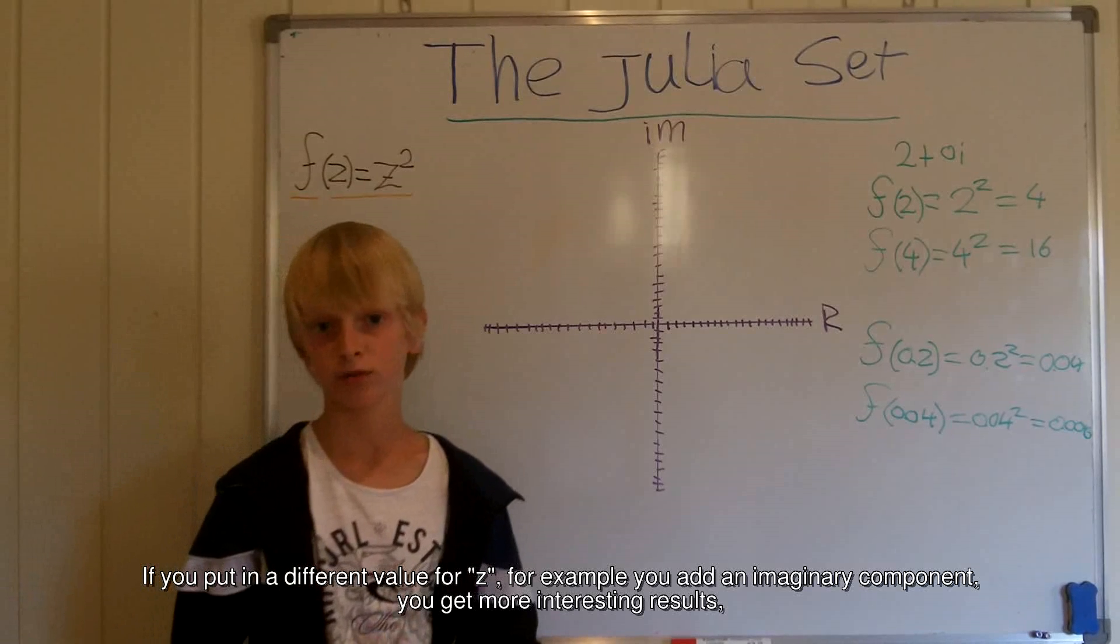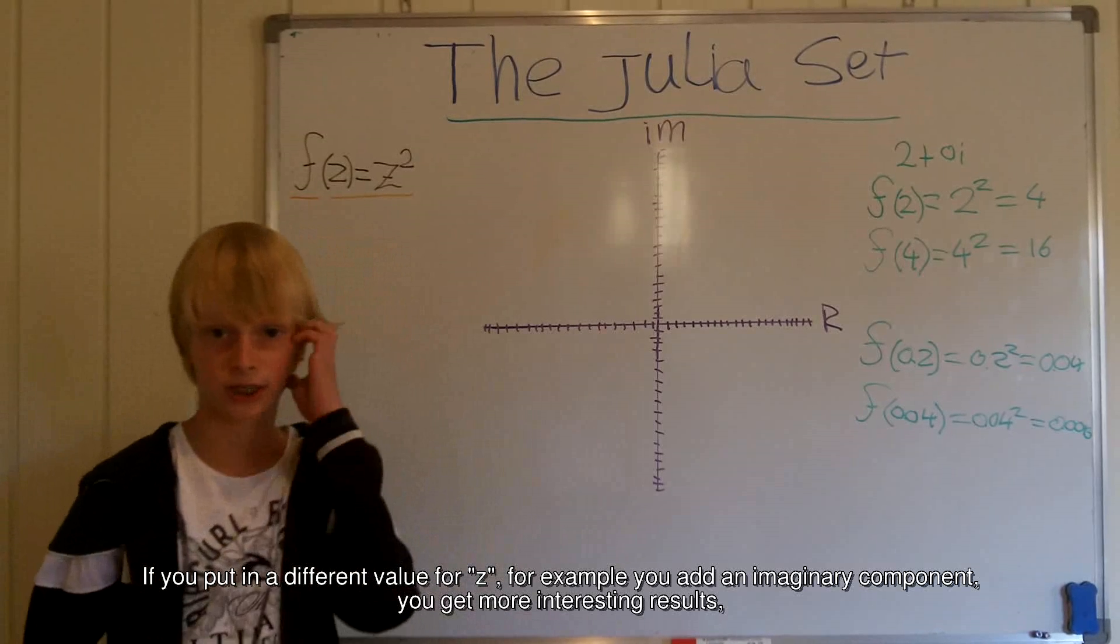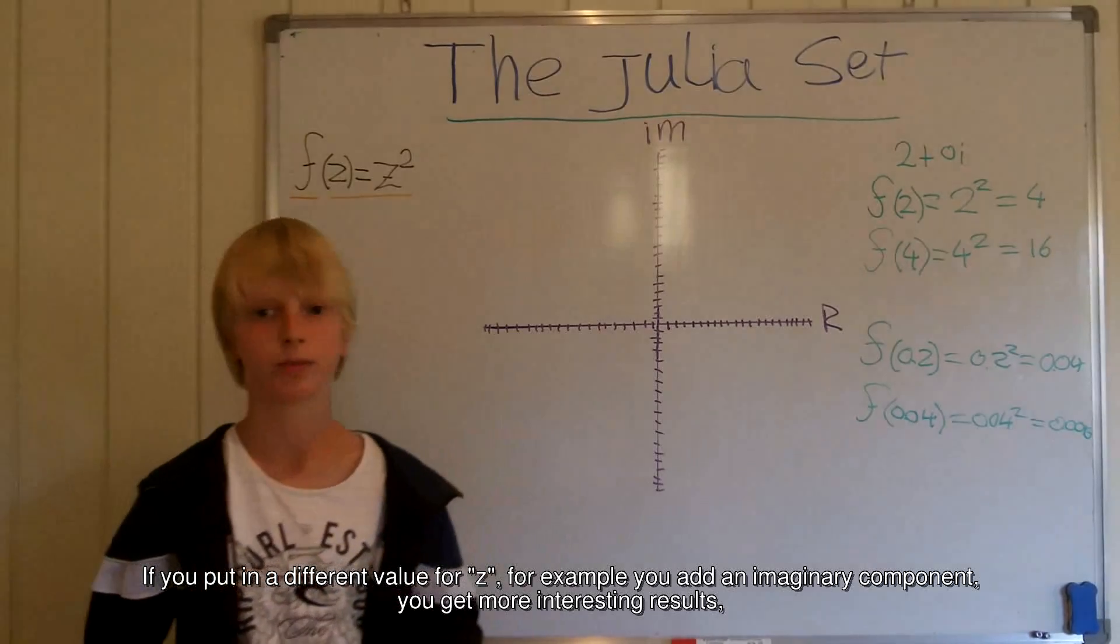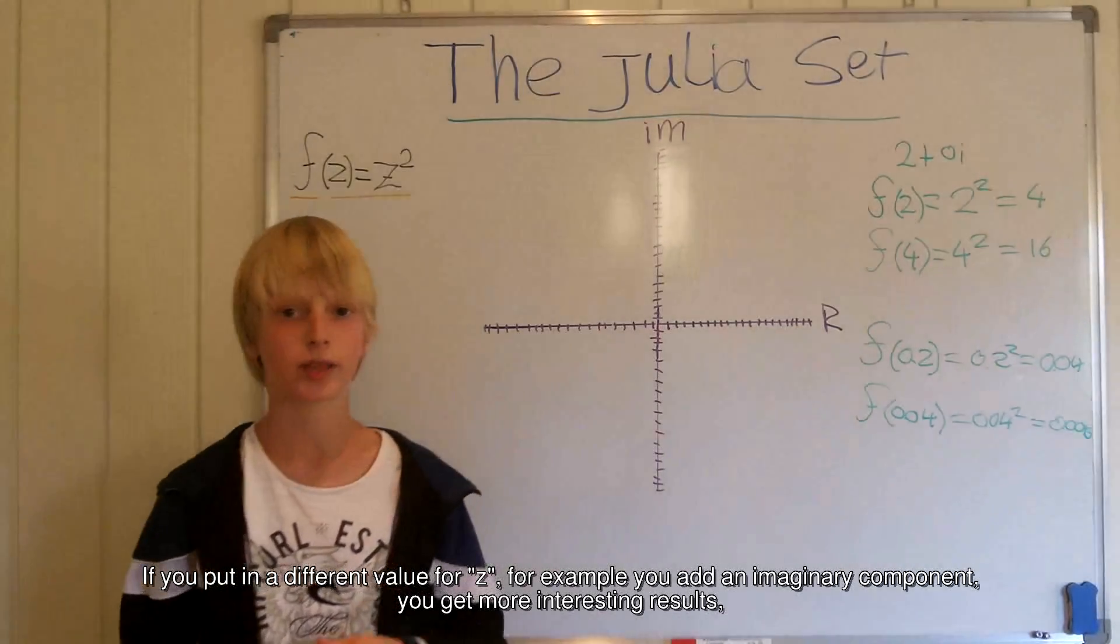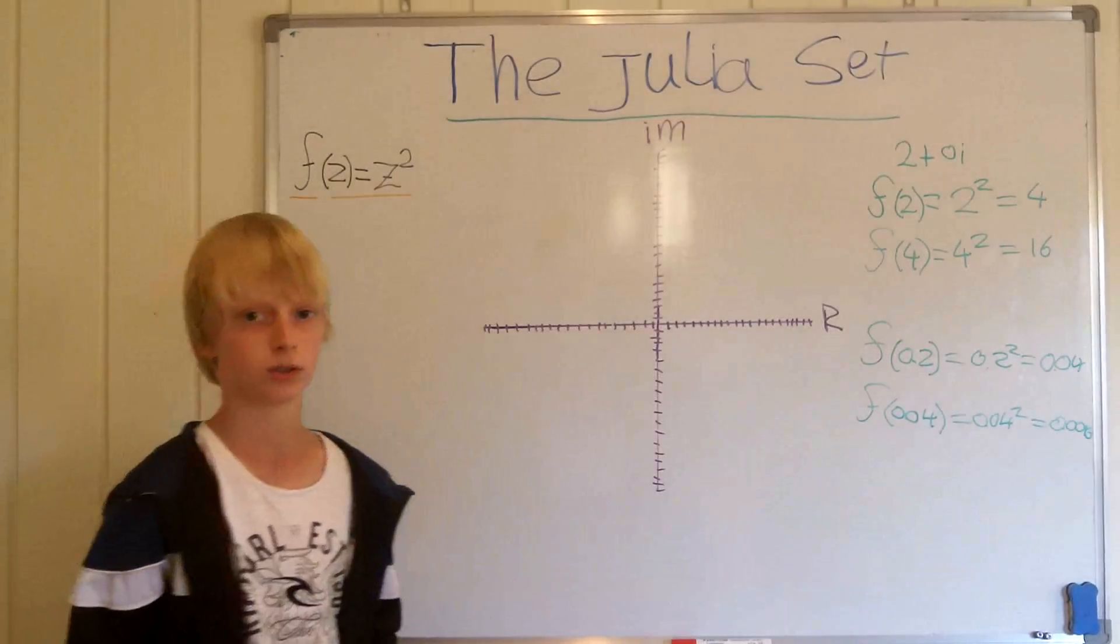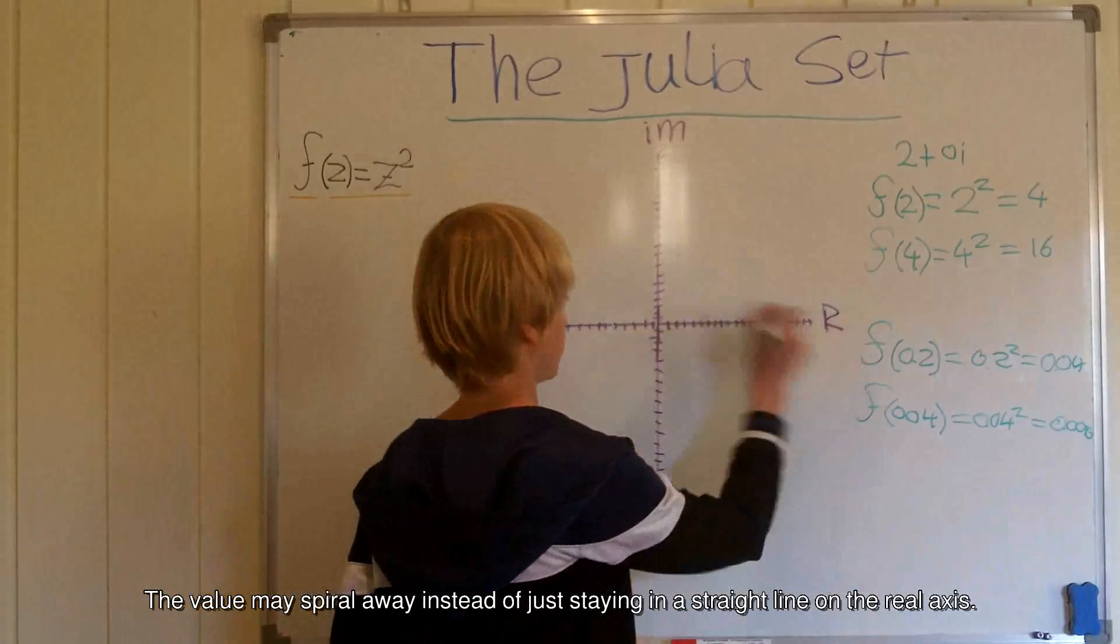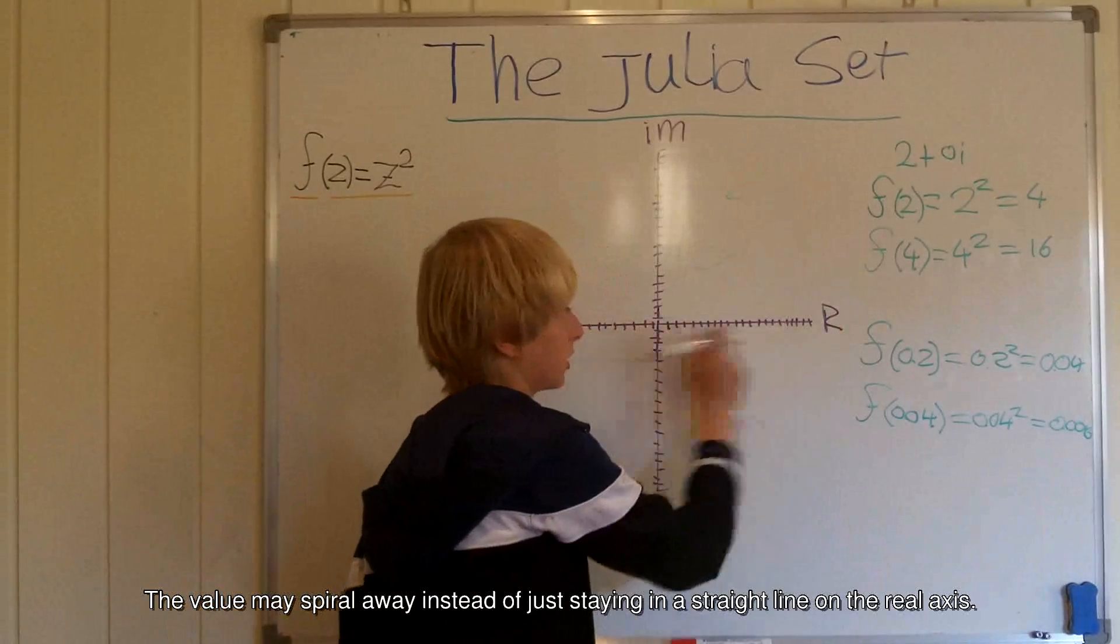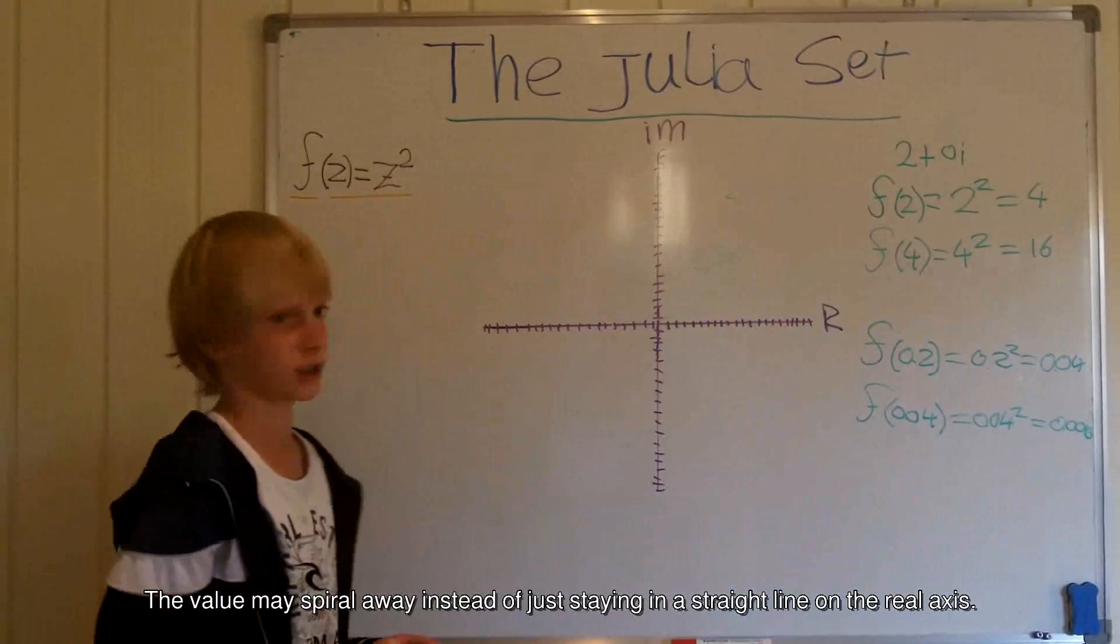If you enter a different value for z, for example you add an imaginary component, you get more interesting results. And the value may spiral away instead of just staying in a straight line on the real axis.